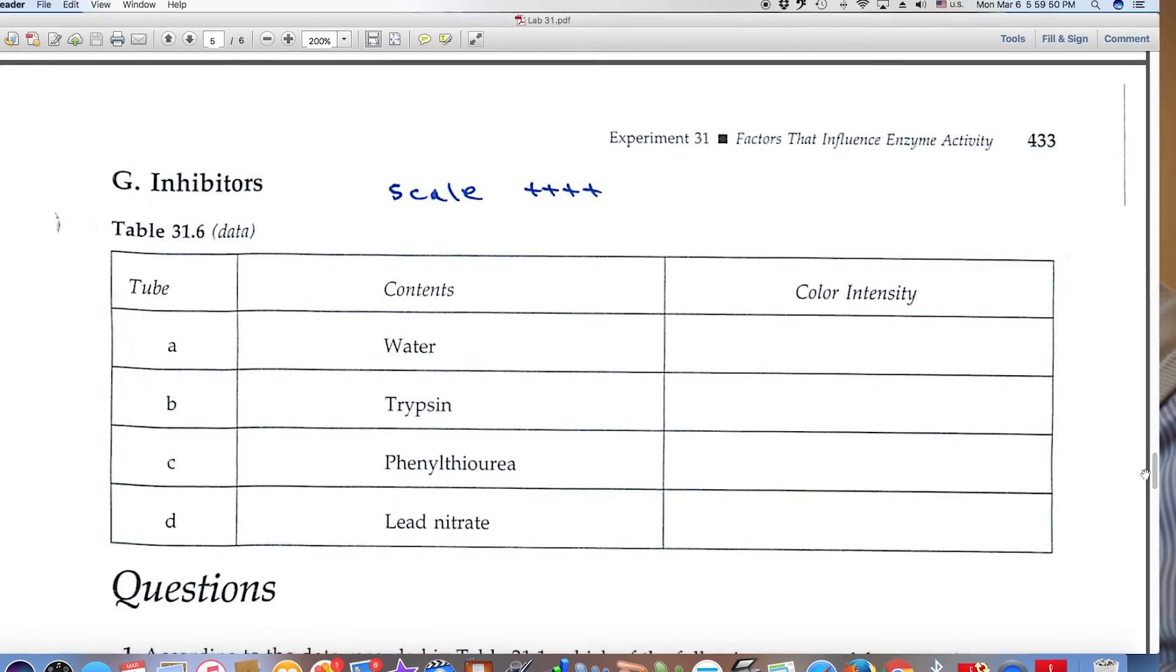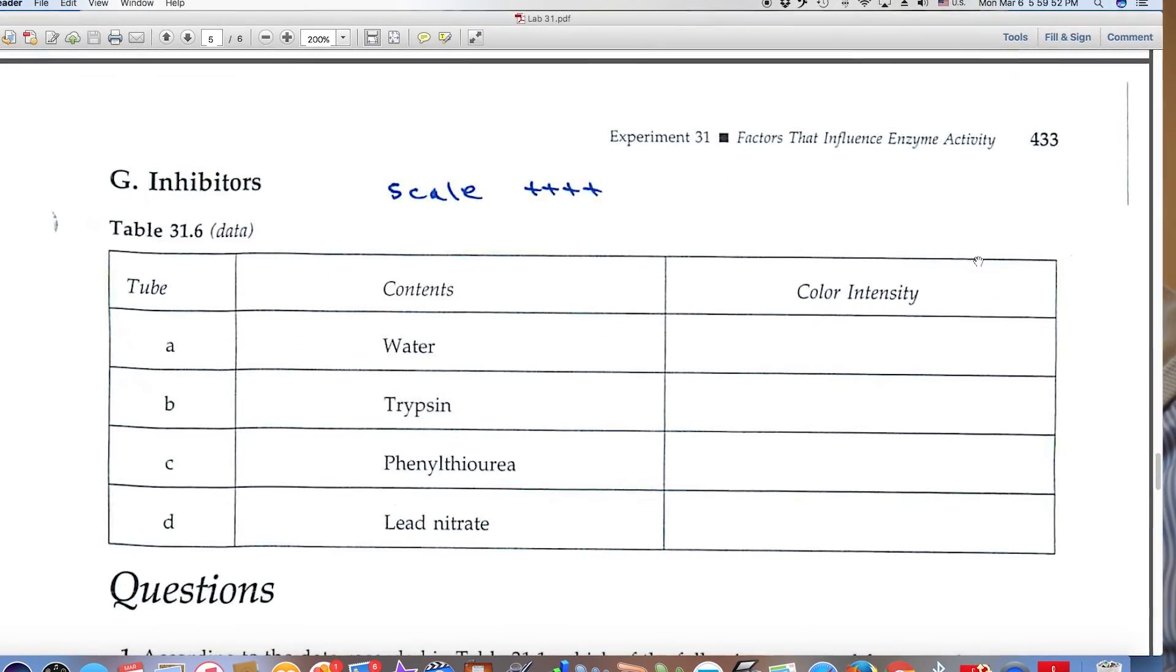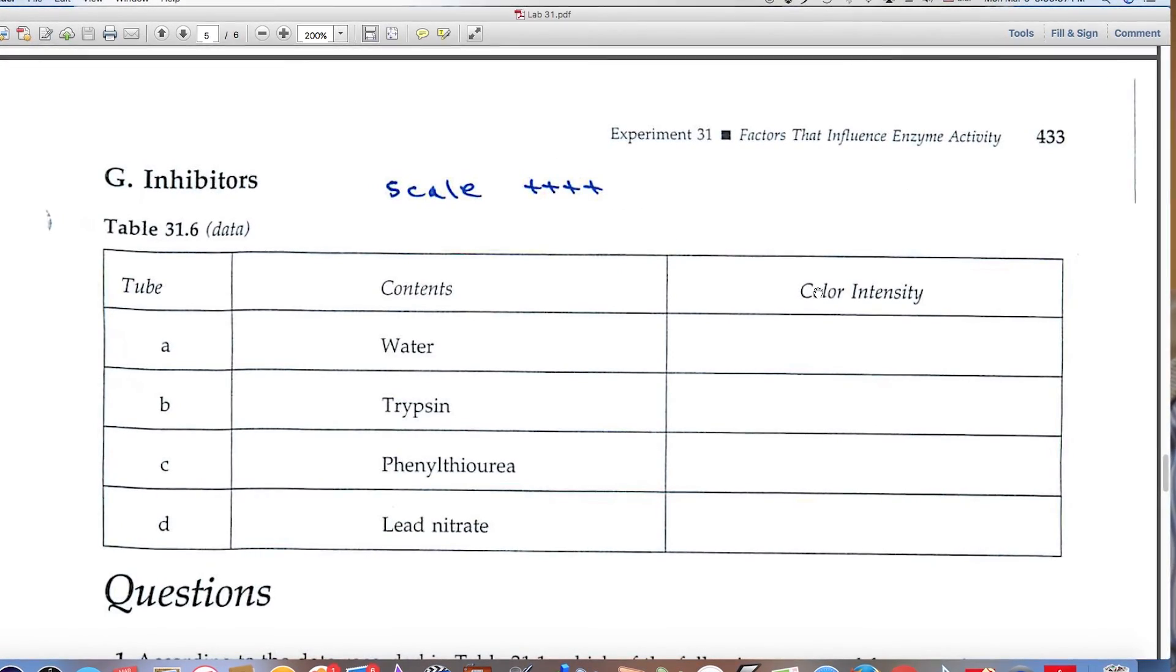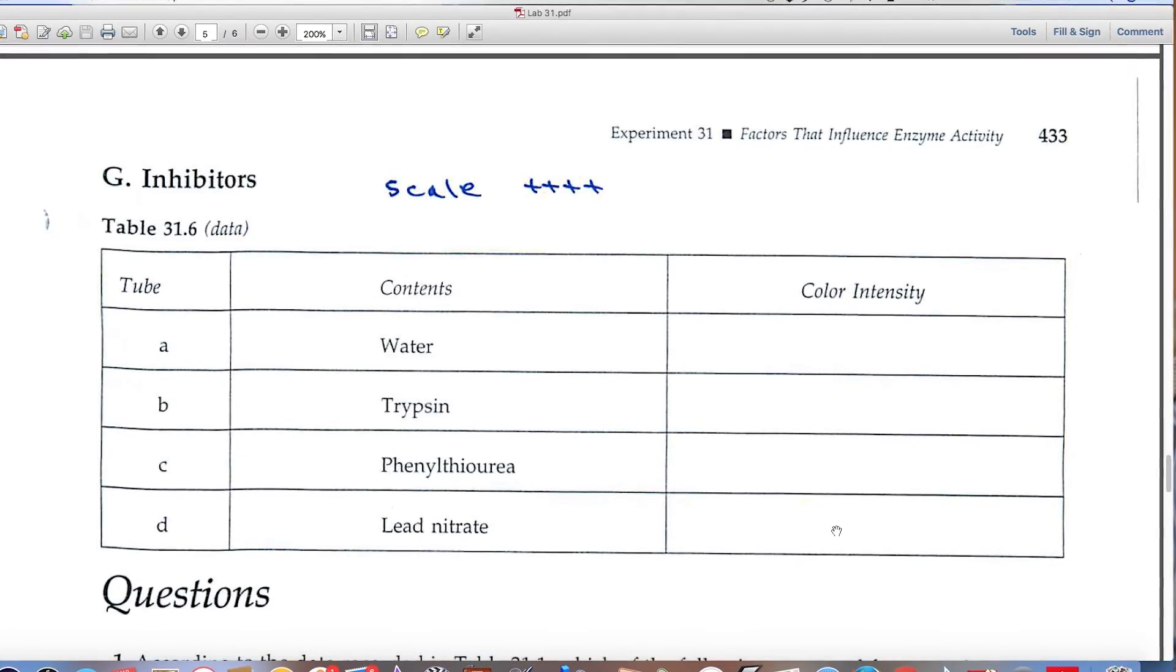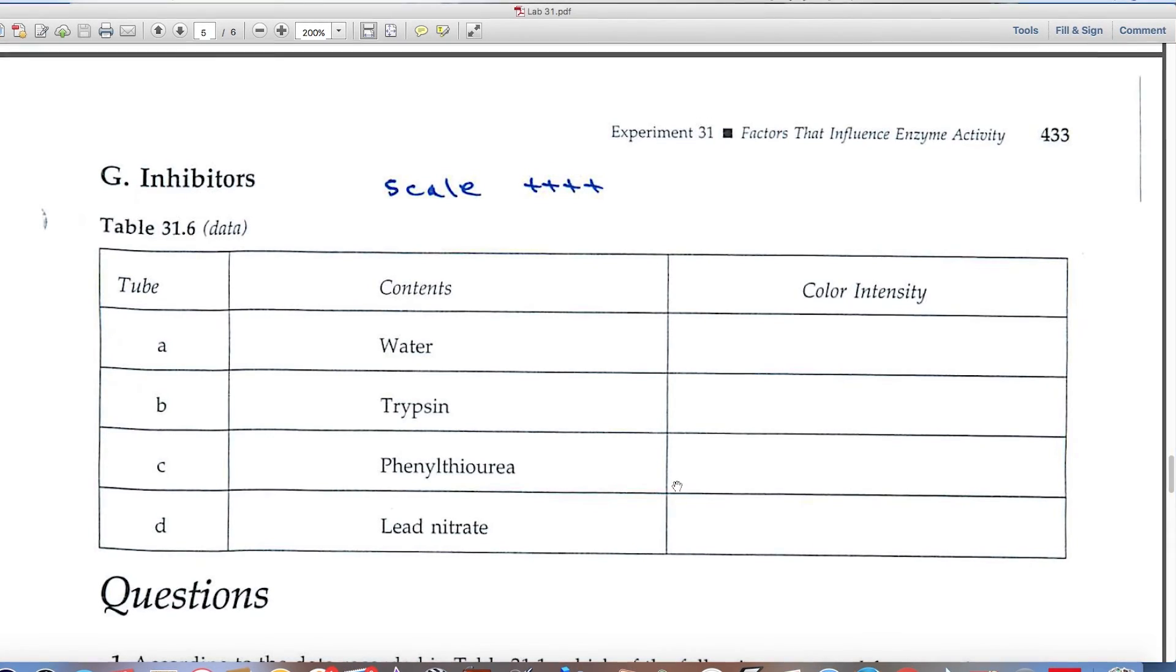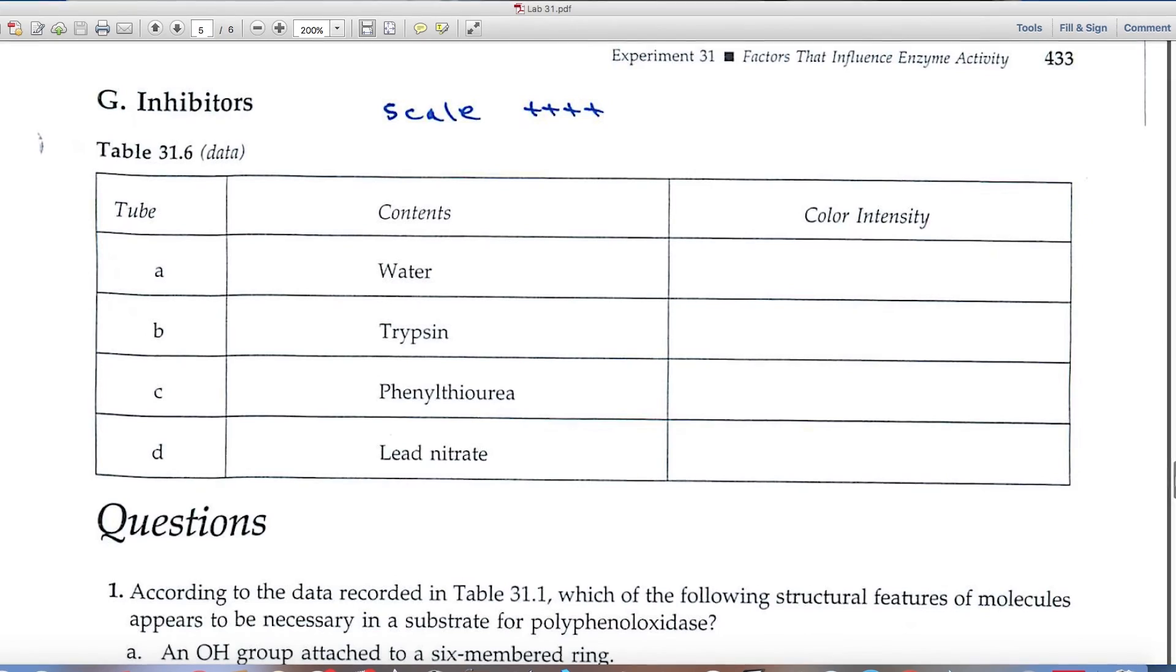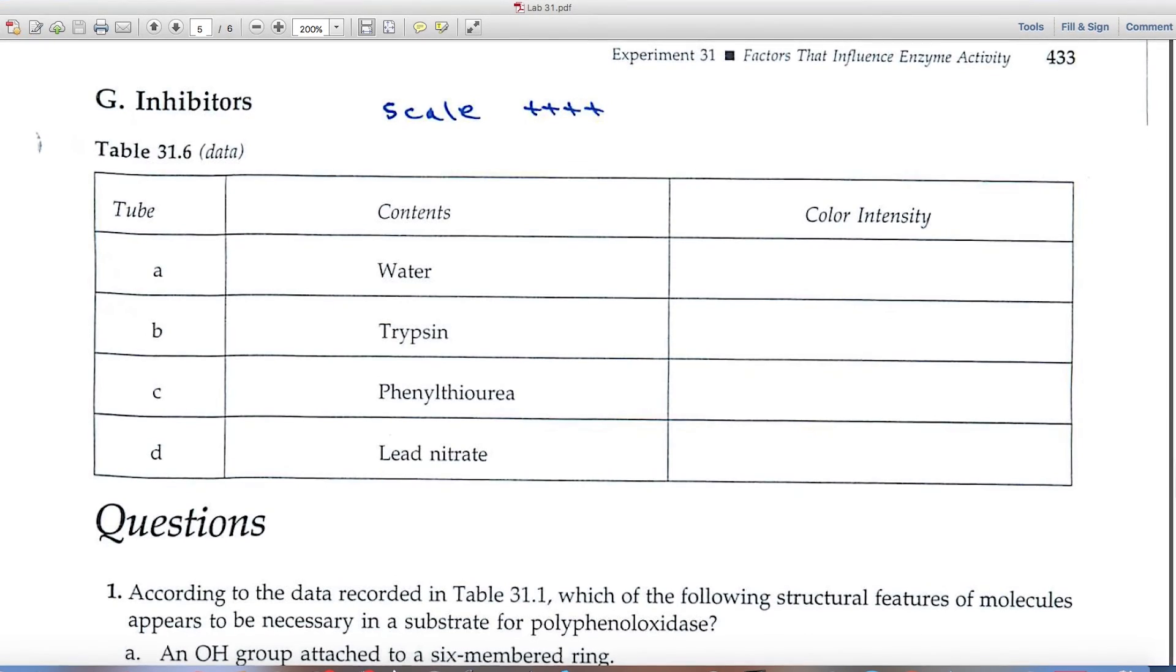Part G looks at the impact of inhibitors, and use the same intensity scale, you'll record the intensity over here on the right. And you won't graph the information in this case, though.